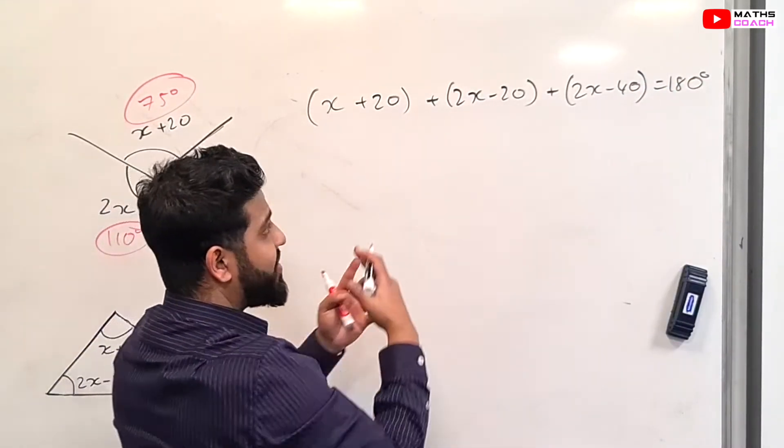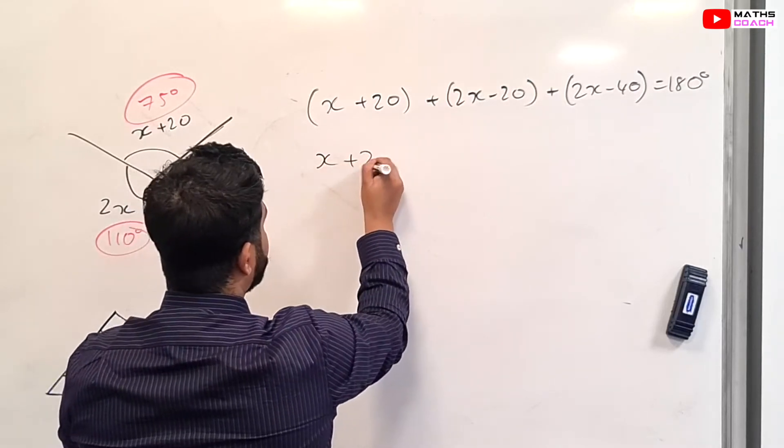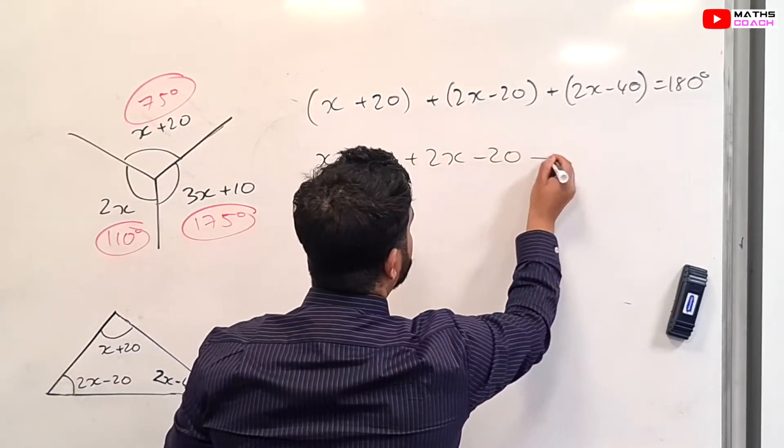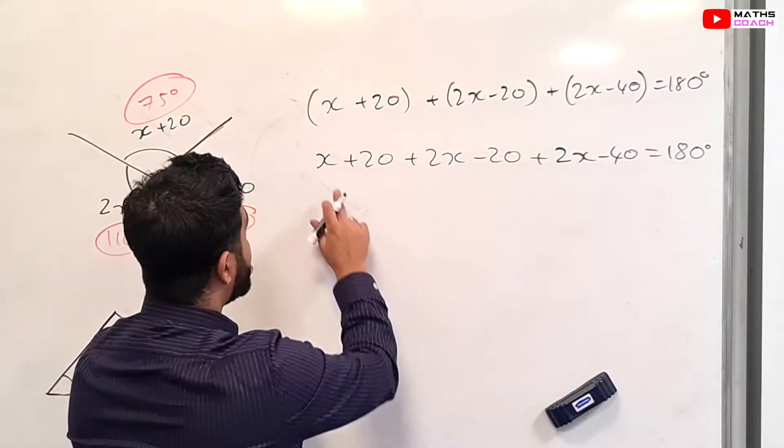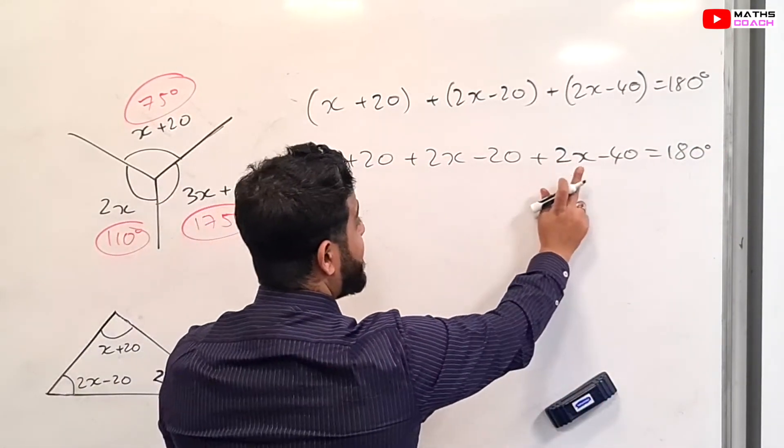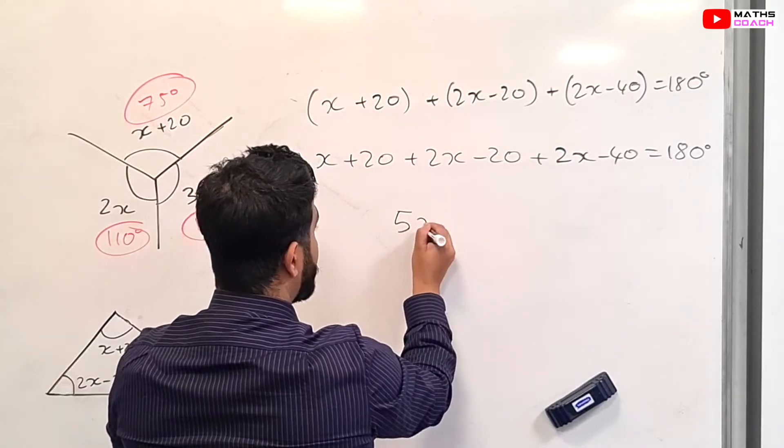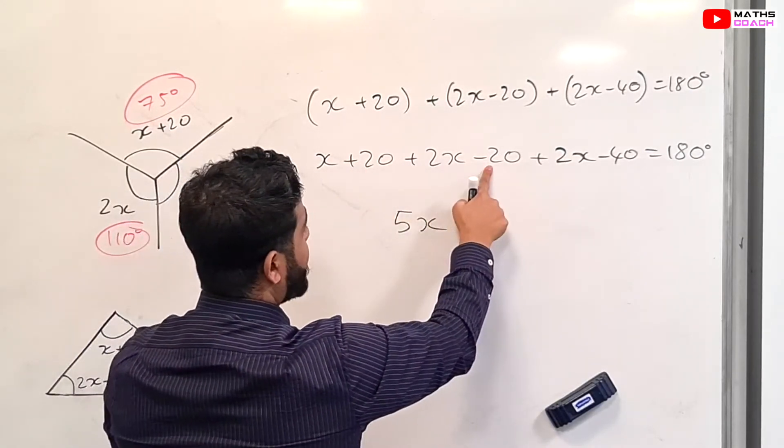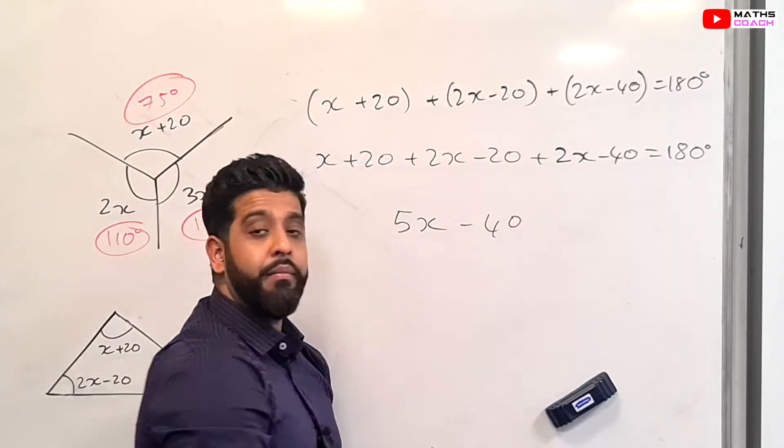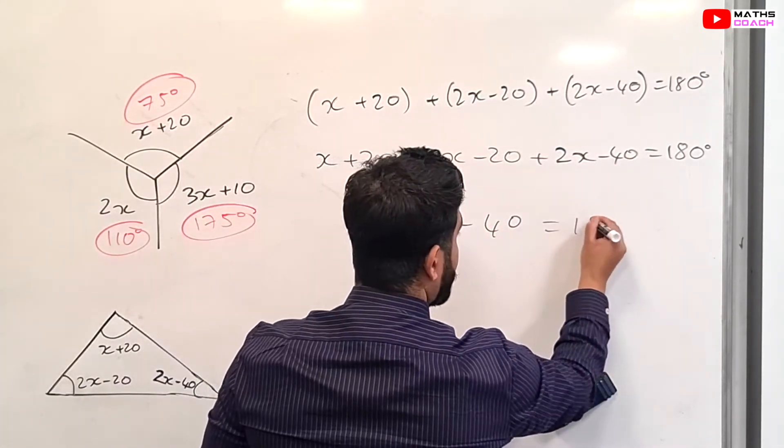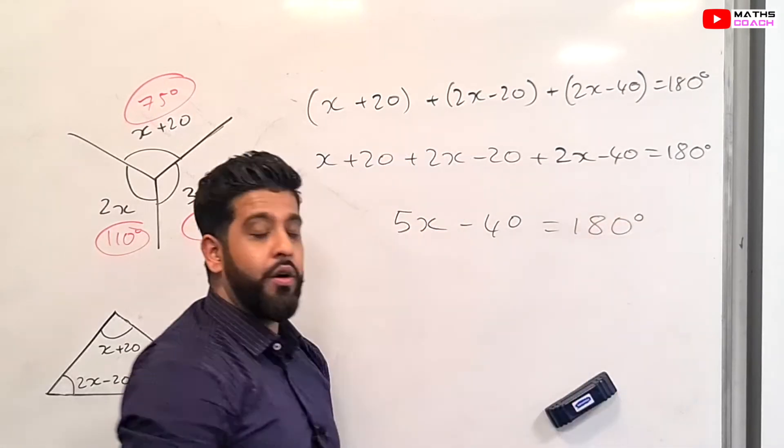If we remove the brackets, the signs don't change. So we can just rewrite everything. Now we collect the like terms. X plus 2X is 3X, plus another 2X is 5X. And then the numbers: we've got 20 minus 20, which cancels, and then minus 40. So overall we get 5X minus 40 equals 180.